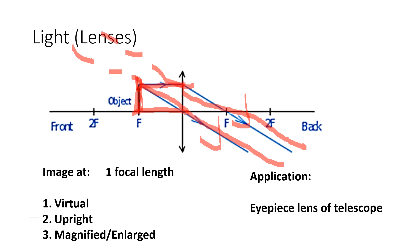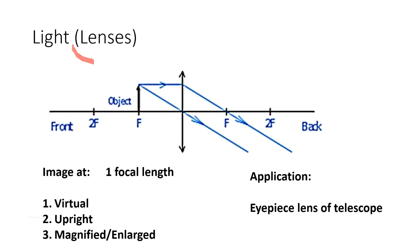When you're done drawing, write the three properties. You'll see that the object is here and the image — traced by the dotted lines backwards — is somewhere behind the lens. The image and object are on the same side, so it is virtual and upright. Because the image is bigger, it is magnified or enlarged, depending on the words your teacher wants you to use. The application for this is the eyepiece lens of a telescope.